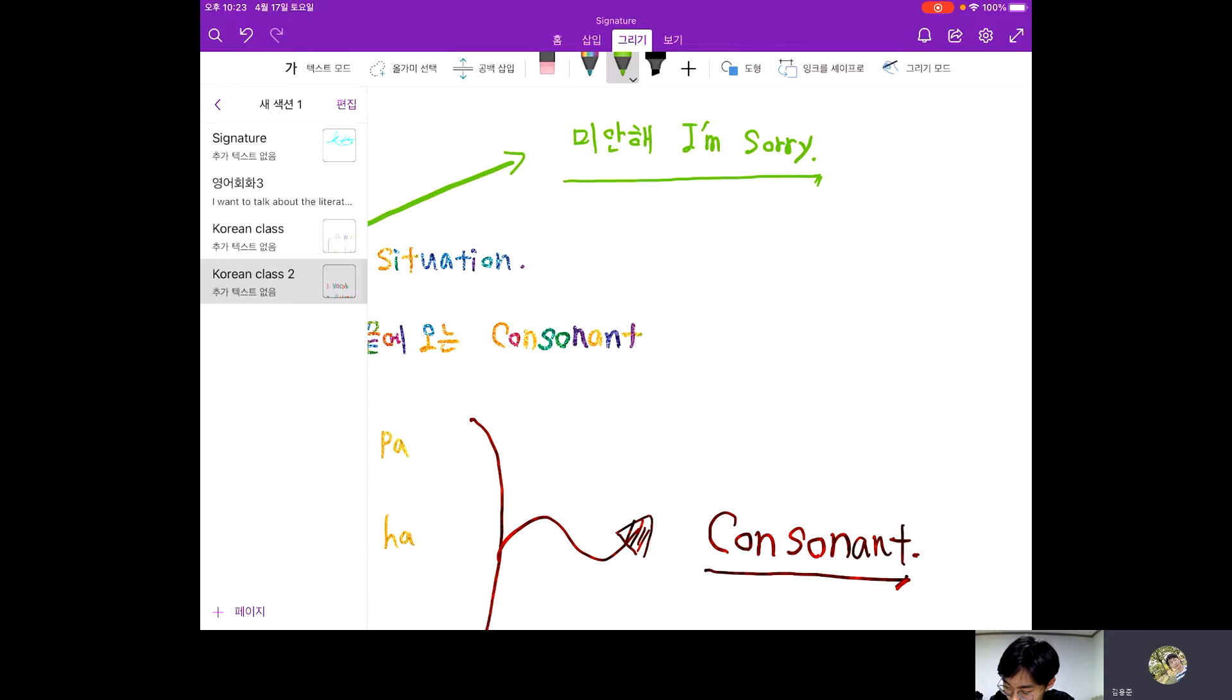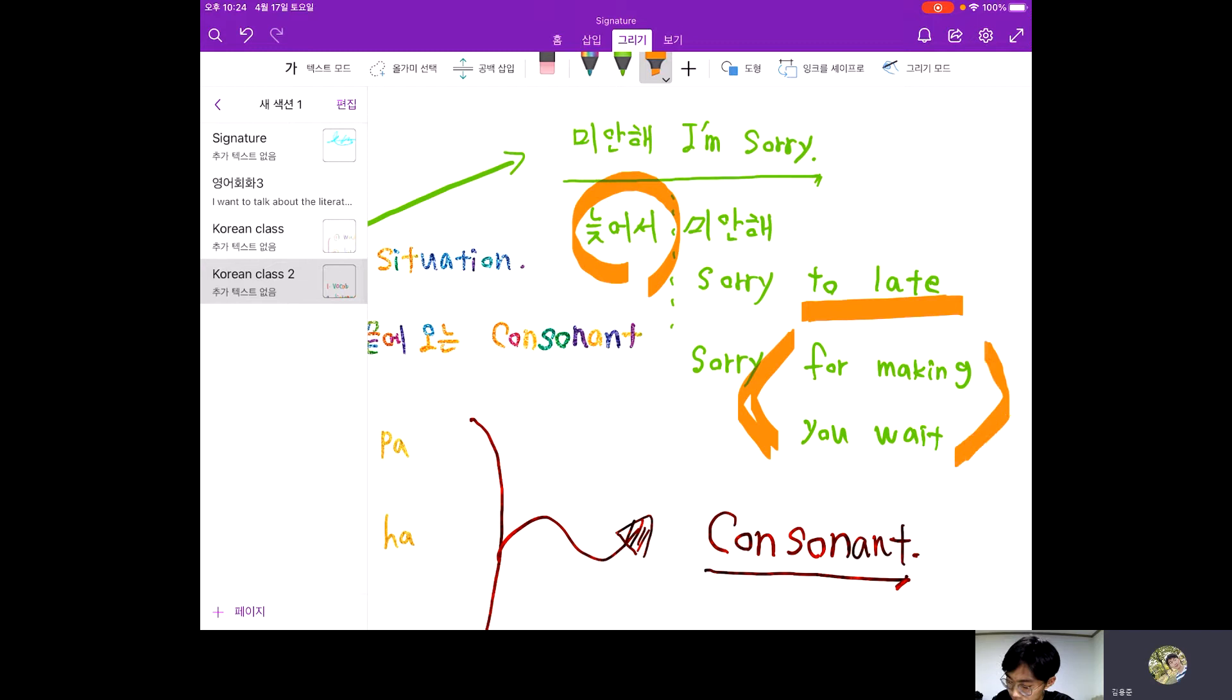You can put some reason in there. For example, 늦어서 미안해, this means sorry too late, or I think sorry for waiting. I think it is proper, sorry for making you wait. In Korean, you can find some difference between Korean and English. In Korean, 늦어서 means that's too late or for making you wait. In Korean, you put this phrase in front of the 미안해.